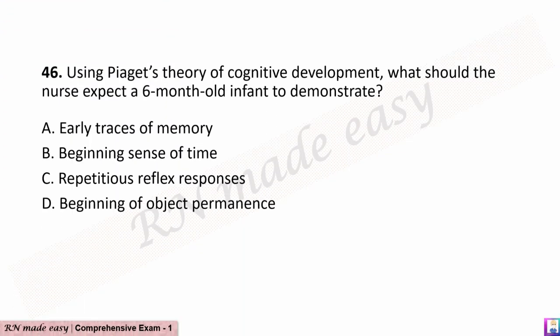Question 46. Using Piaget's theory of cognitive development, what should the nurse expect a 6-month-old infant to demonstrate? A. Early traces of memory. B. Beginning sense of time. C. Repetitious reflex responses. D. Beginning of object permanence.